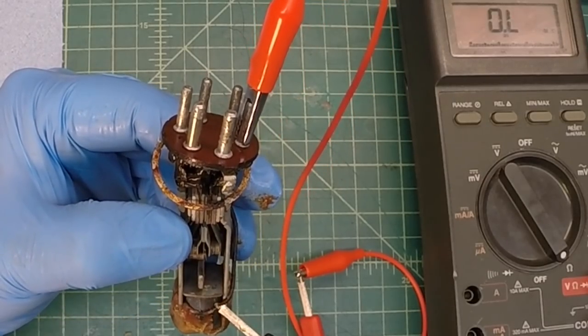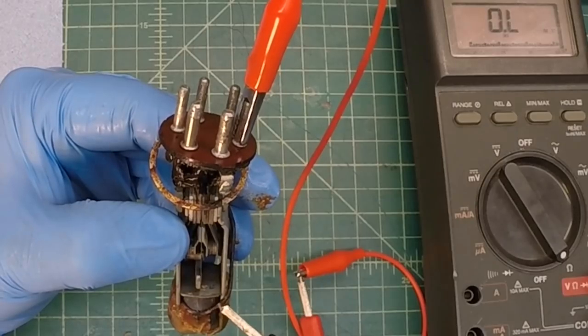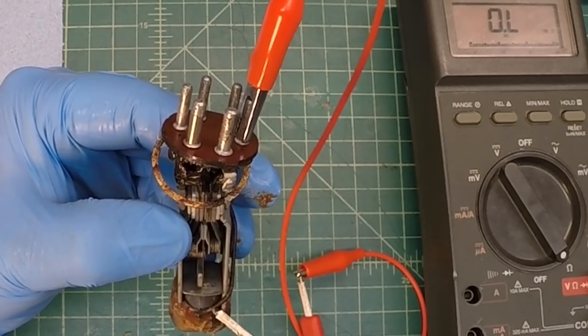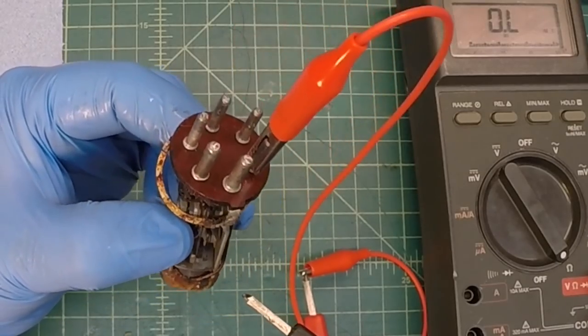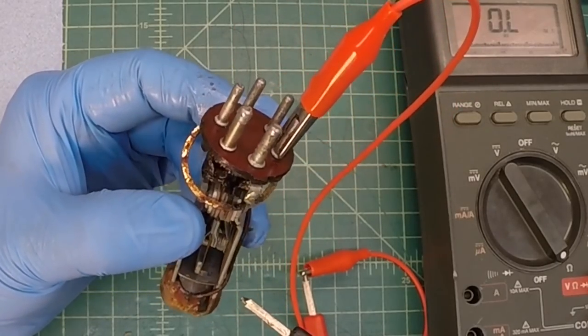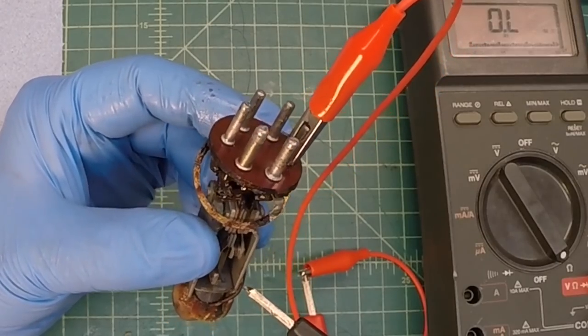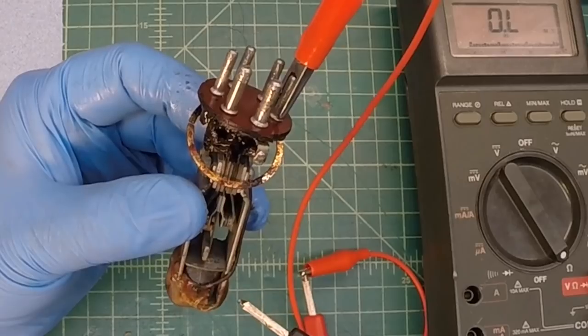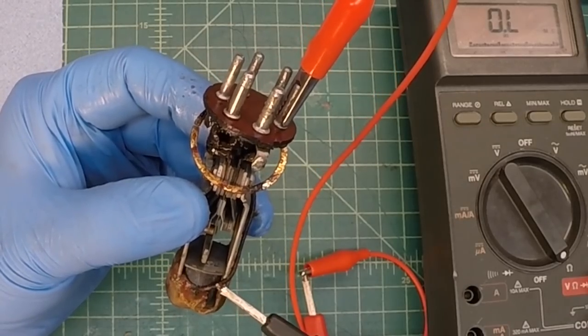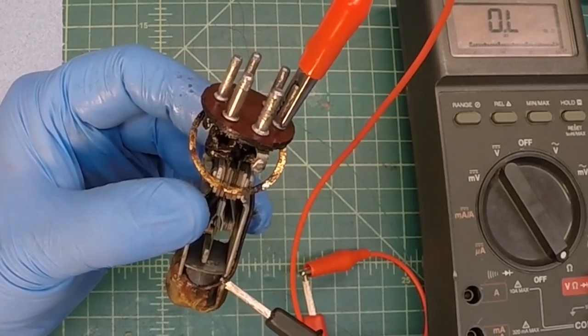We've already checked the vibrator in an earlier video just to make sure the coil itself was good. And we know the coil is good because we're able to see the vibrator actually move back and forth even though it's in intermittent nature.